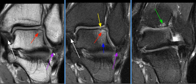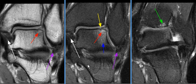There is scarring of the anterior talofibular ligament and calcaneofibular ligament. Also noted is scarring of the deep fibers of the deltoid ligament.